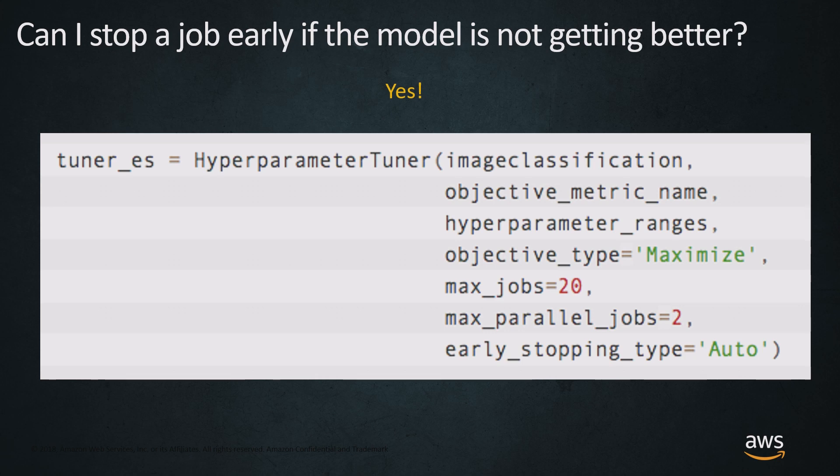You can also enable early stopping — you can absolutely stop a model early if it is not getting better. Here we're setting up an image classification tuner with the objective metric and hyperparameter ranges, and enabling auto early stopping. It looks at previously run jobs, evaluates the objective metric, and if you're maximizing and the model hasn't improved within a certain number of periods, it cuts off that job. This saves money and prevents overfitting.